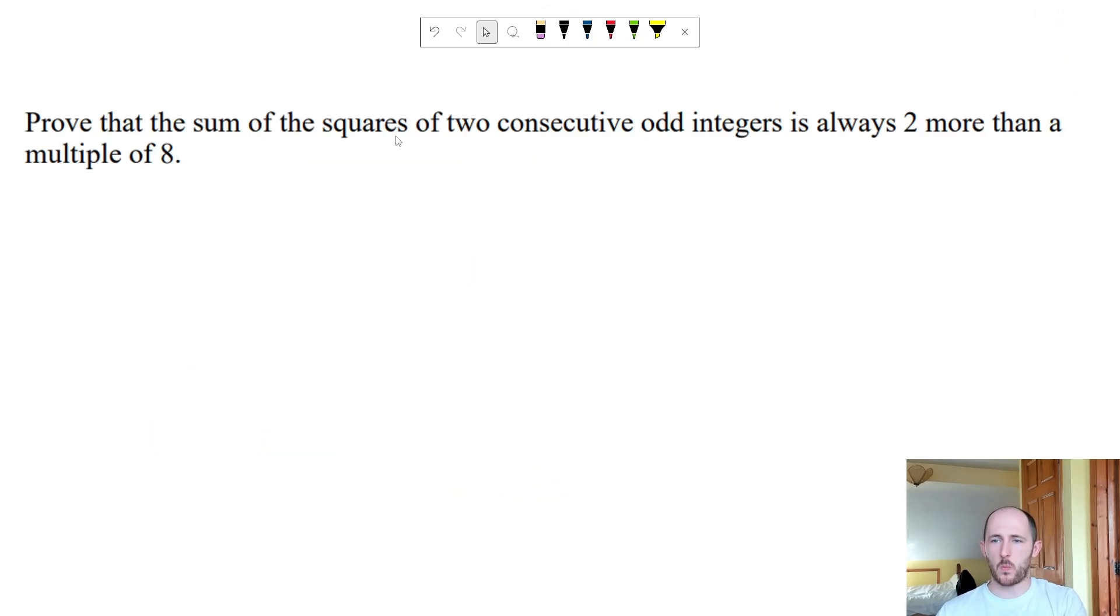Prove that the sum of the squares of two consecutive odd integers is always two more than a multiple of 8. Students kind of get into their own heads about this they get a bit too worked up. Break it down: it's a sum so we're going to have an add, squares so we're going to be squaring two things, of two consecutive odd integers so we're going to have that 2n plus 3 and 2n plus 5.